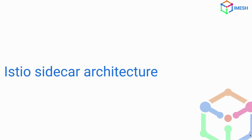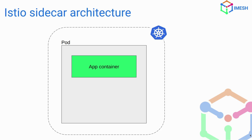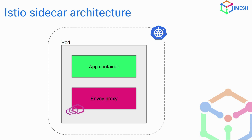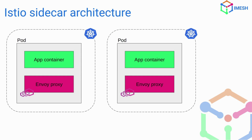Let's begin with Istio Sidecar architecture. Here we have an example of a standard Kubernetes pod running a particular app in a container. Once the namespace is Istio injection enabled, Istio starts injecting the Envoy proxies inside the pods. Each pod is injected with the Envoy proxy and traffic internal to the pod is routed through Envoy proxies. The Envoy proxies are connected with each other and have networking capabilities to talk to each other. When the pod on the left communicates with the pod on the right, traffic flows from the app container to the Envoy proxy of pod 1, then to the Envoy proxy of pod 2, which forwards the request to the app container. All telemetry, L7, and L4 is handled at the Envoy proxy level.